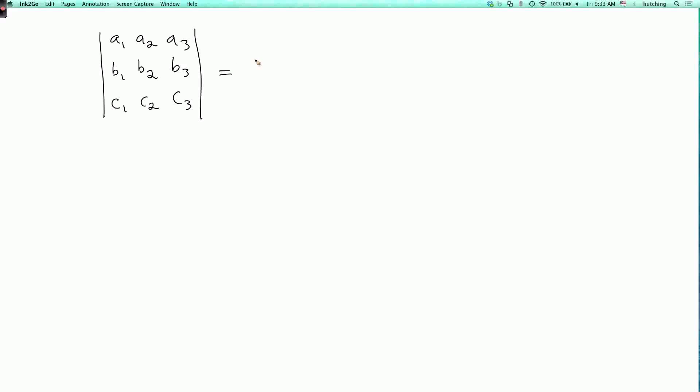is a sum of six terms. So the first term is a1 b2 c3, the next one is a2 b3 c1, and the next one is a3 b1 c2, and then there are three negative terms. So it's minus a1 b3 c2, minus a2 b1 c3, minus a3 b2 c1.